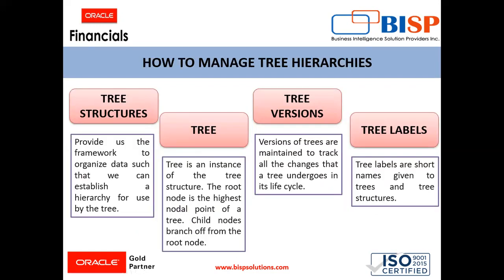The tasks required to manage hierarchies include tree structures, trees, tree versions, and tree labels. Tree structures provide the framework to organize data and establish a hierarchy. A tree is an instance of the tree structure, where root nodes are the highest nodal point and child nodes branch off from them. Tree versions track all changes a tree undergoes in its lifecycle, and tree labels are short names given to trees and tree structures.